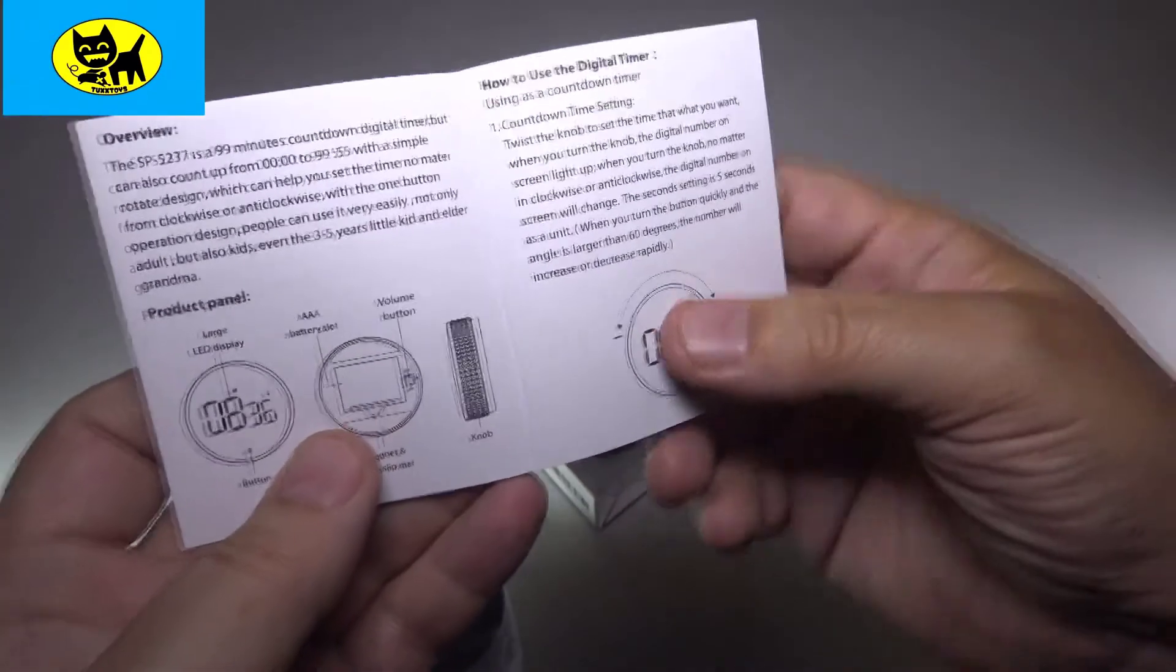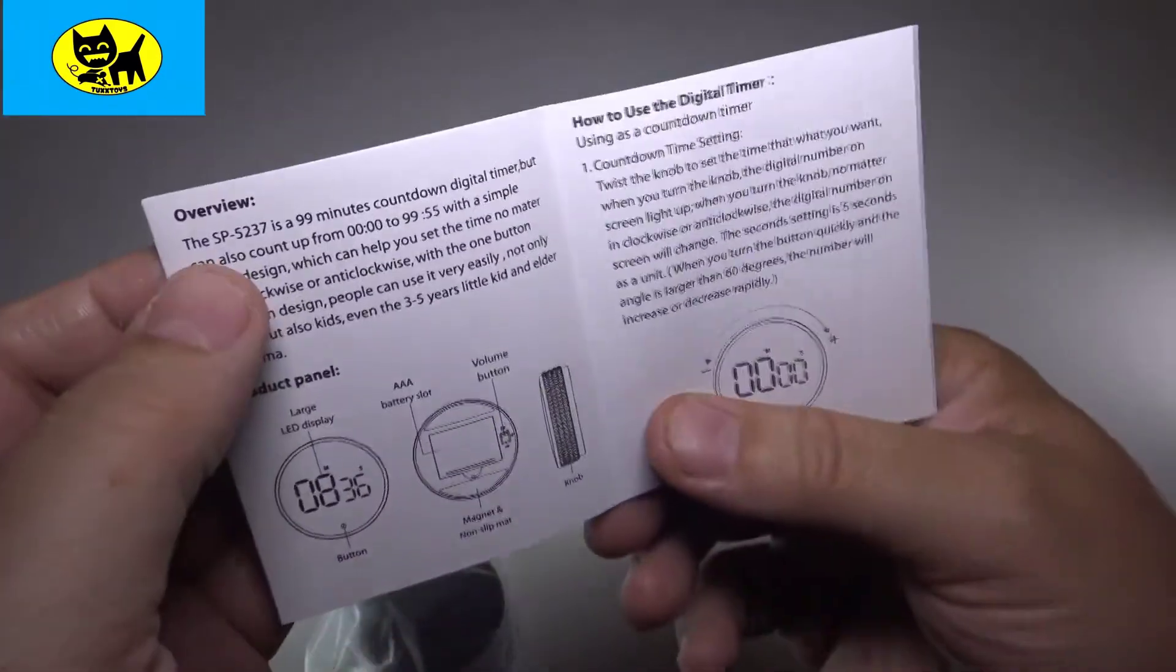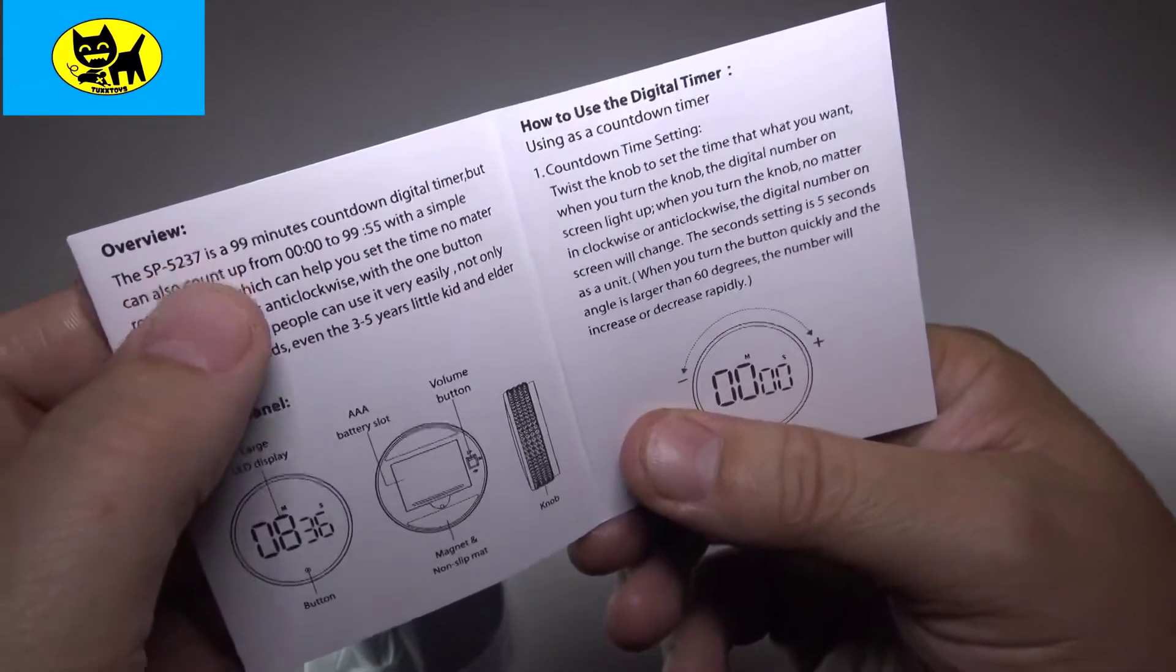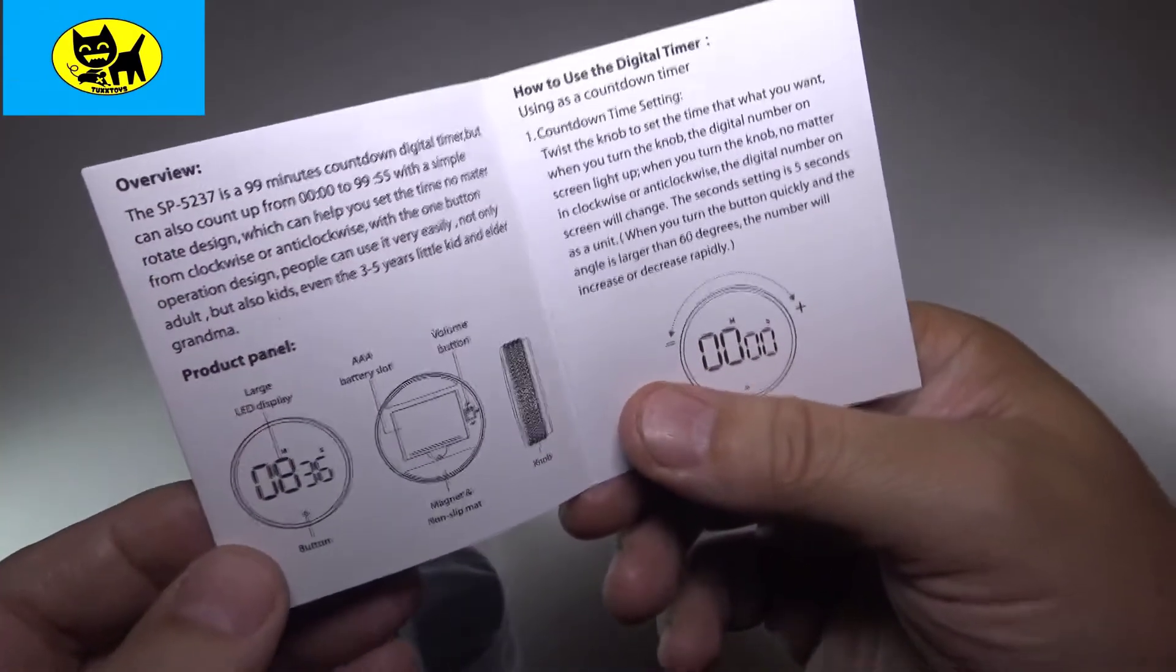Thanks to the magnetic backing, you can stick this timer to an appliance and view it as you move about the kitchen. Alternatively, you can pop open the retractable kickstand for counter or tabletop use.